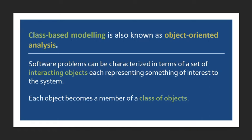Software problems can be characterized in terms of a set of interacting objects, each object representing something of interest to the system. In connection with our TV object example, if you look at the wall, you will find the cable socket, which is another object. The TV connects to the cable socket and retrieves movies that it can display.